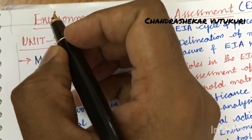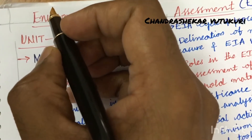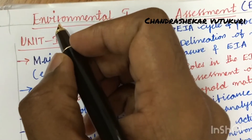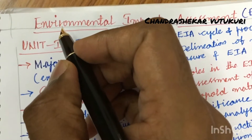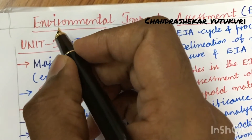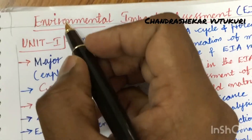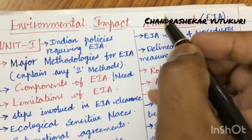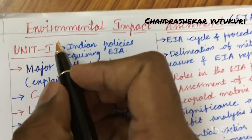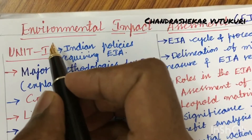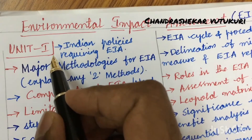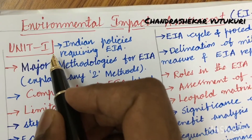Welcome back students, hope you all are doing well and preparing for your examination. In today's lecture video I am going to cover few important concepts and questions for the course Environmental Impact Assessment — EIA — under JNT HR 18 regulation, with Unit 1 as per the COVID pattern. You know that eight questions will be asked of which you are supposed to answer any five.